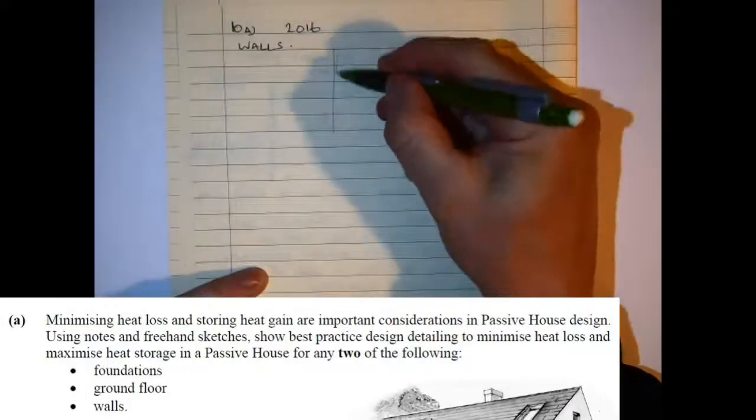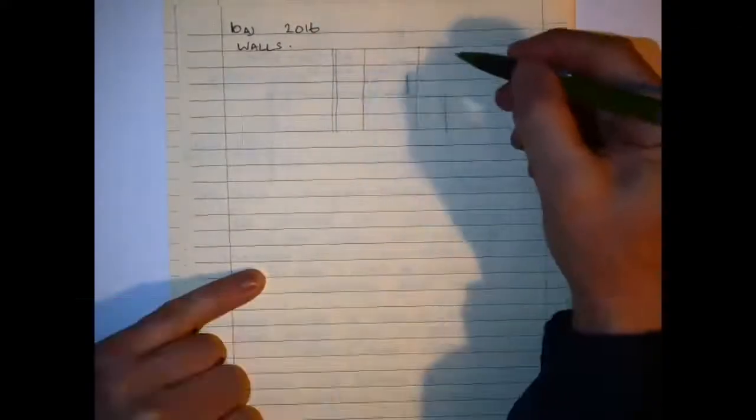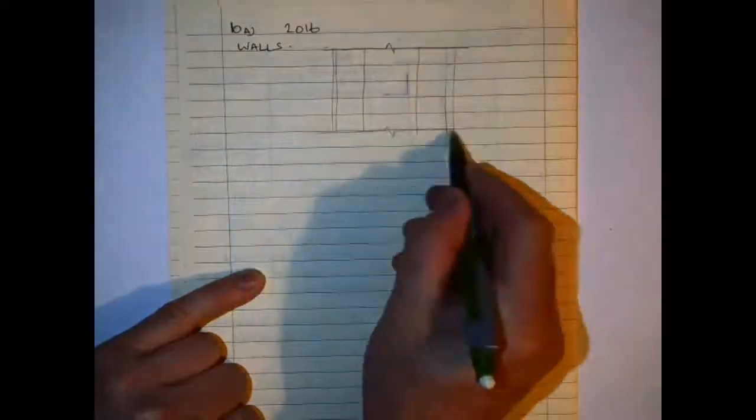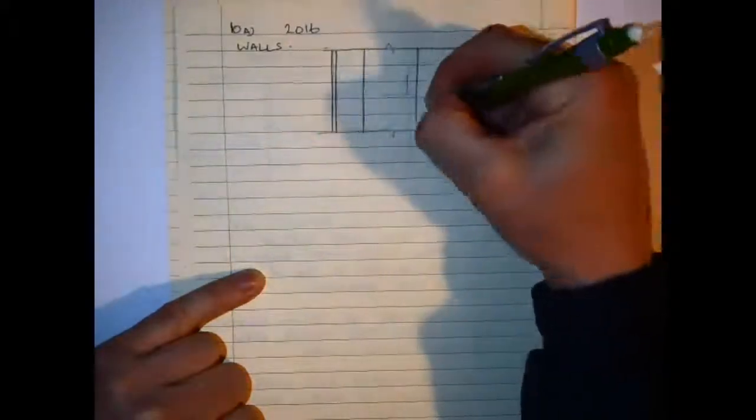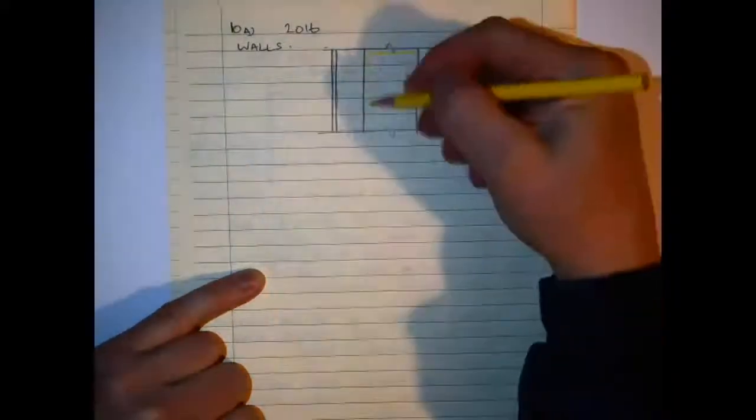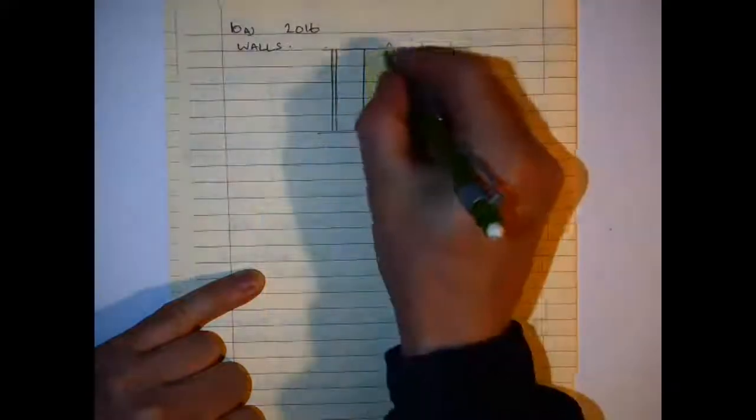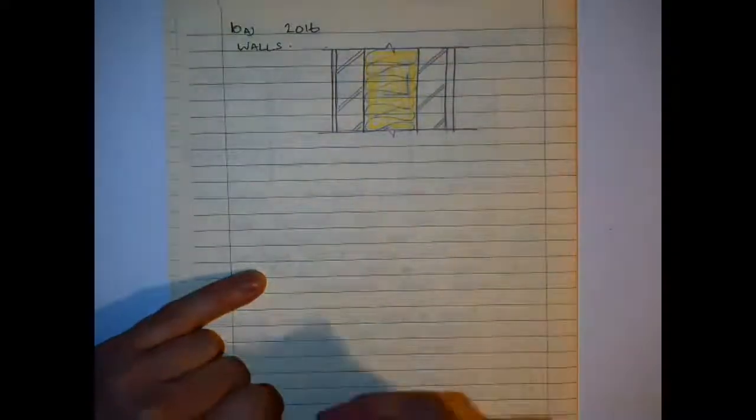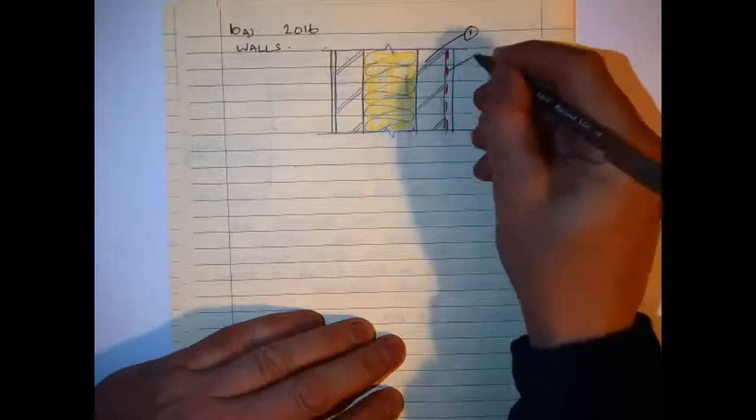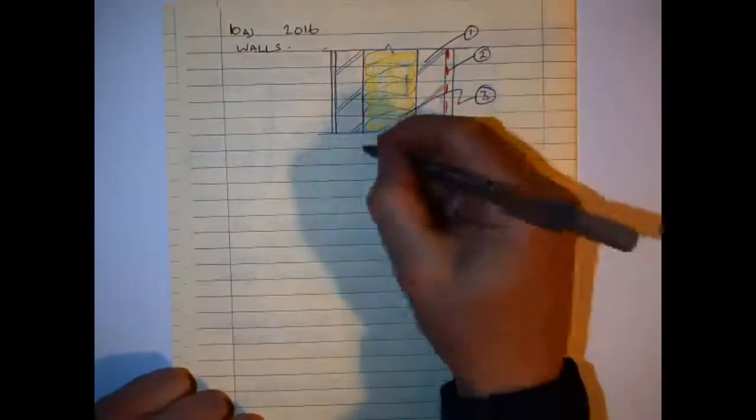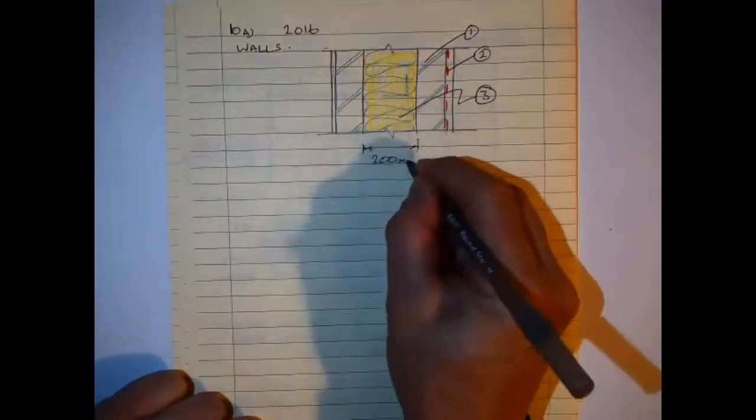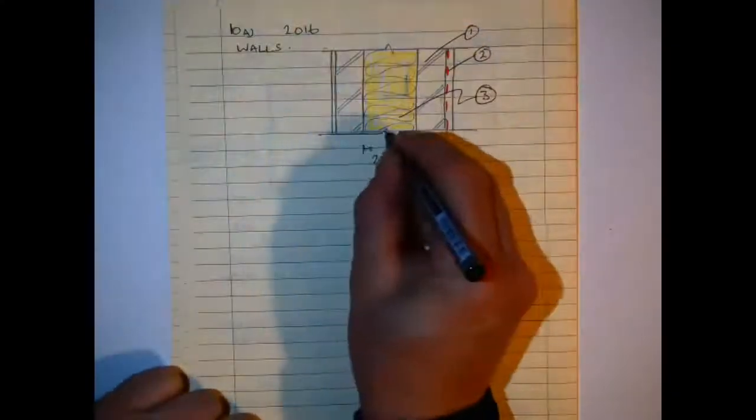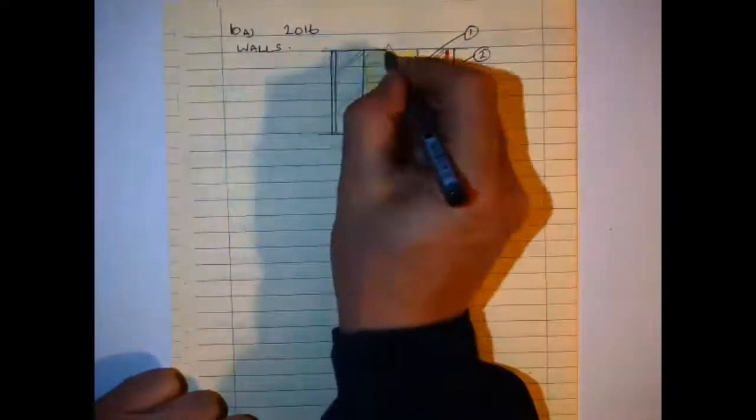So then the next option I am picking here is a wall. And you may wonder why I did not bother with the foundation. Well I have picked what I feel would have been the simplest of the drawing details to do. So in this here again a little bit of color to make it stand out. I have a cavity wall. I am showing render on the outside and I am showing where I would have my air tightness barrier as well and the thickness of insulation.